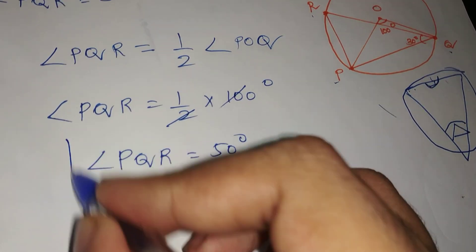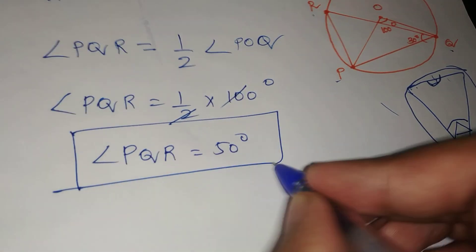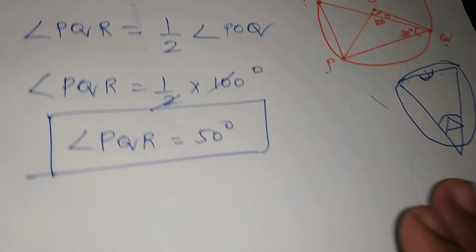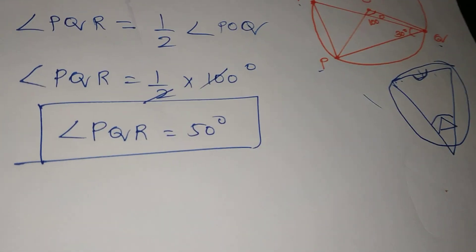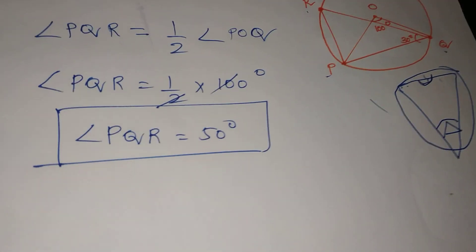So angle PQR is equal to half of angle POQ, which is half of 100, so angle PQR equals 50 degrees. So we have confirmed angle PQR is 50 degrees.